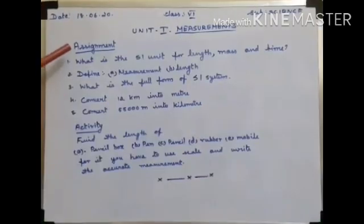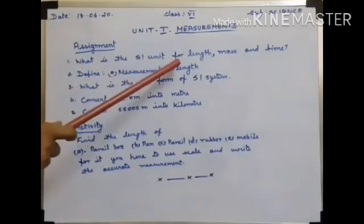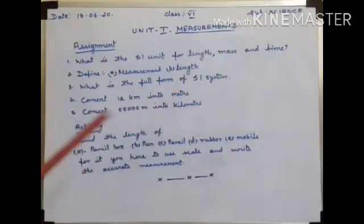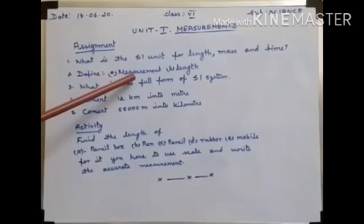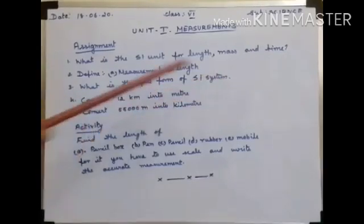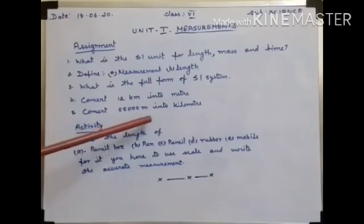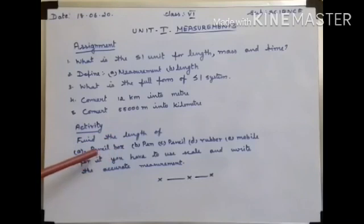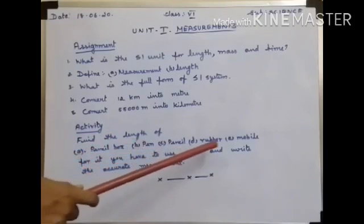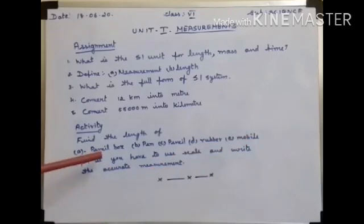Now, the last portion is the assignment. One: what is the SI unit for length, mass, and time? Two: define measurement and length. Three: what is the full form of SI system? Four: convert 12 kilometers into meters. Five: convert 55,000 meters into kilometers. Activity: find out the length of a pencil box, pen, pencil, rubber, and mobile using a scale and write the accurate measurement. Okay children, thank you very much. Have a nice day.